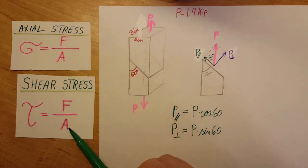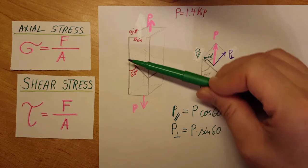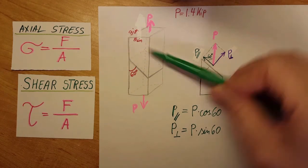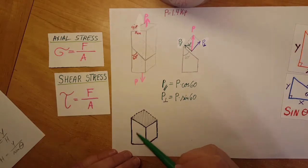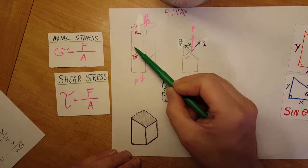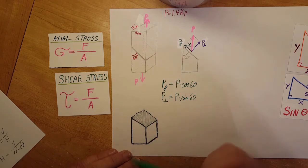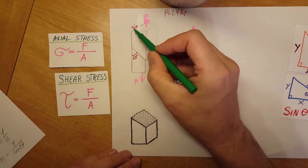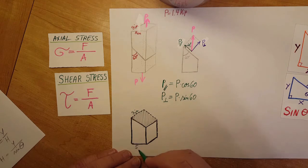We need to find the area of the slanted glue surface at 60 degrees — not the cross-section of the beam, but the area along the glue splice. The back dimension is given as 3 inches. However, the slanted length along the splice is not directly given; what we know is the vertical dimension of 5 inches.